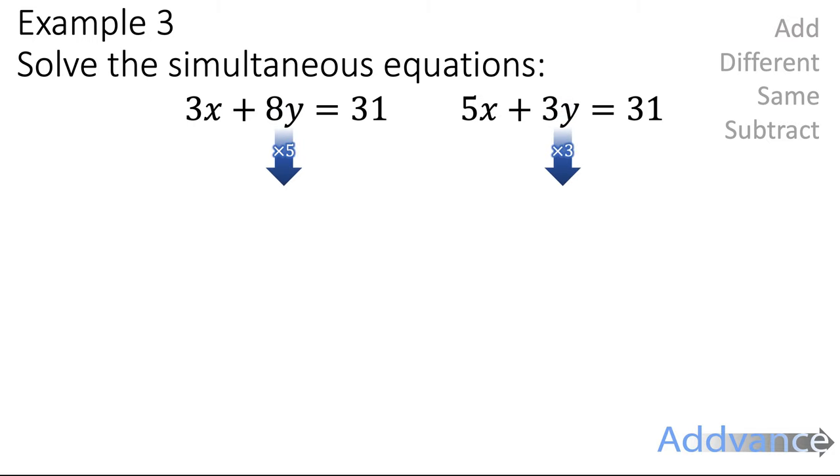So I multiply by 5, multiply by 3. And I get 15x plus 40y equals 155. 15x plus 9y equals 93. Okay. Now, the 15x and the 15x are similar. So we can cancel them out. Okay. And they are both positive. So we're going to subtract. They're both plus 15x and plus 15x. They're the same. So we subtract.